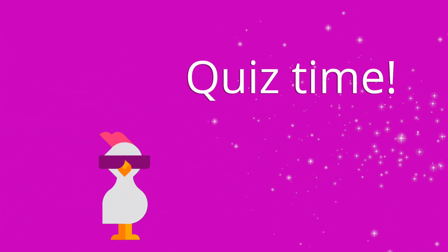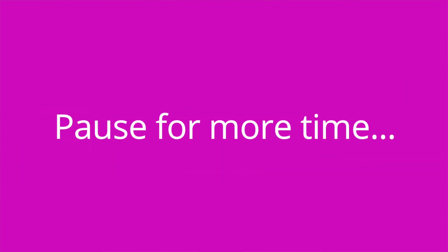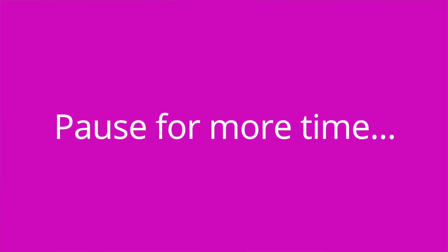It's quiz time and I've got three questions for you. Question number one: which hormone in females and which hormone in males are responsible for the development of secondary sex characteristics? The answer is estrogen in females and testosterone in males. Question number two: precocious puberty is defined as sexual maturity that occurs before age blank for females and age blank for males. The answer is age 8 for females and age 9 for males.